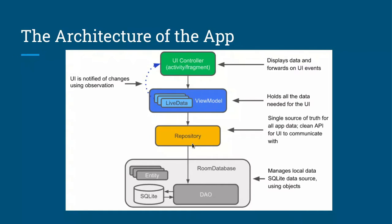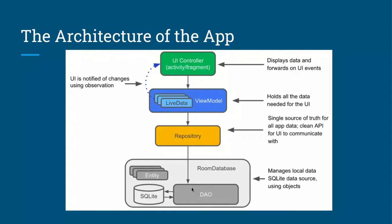For example, if we had a data source coming from a network, we could fetch the data from the network through the Repository. But for now, we only have a Room Database, so the Repository will directly fetch the data from it. Inside the Room Database, we have several things: a DAO, an Entity, and SQLite. These are objects we create using Kotlin to communicate with our SQLite database.